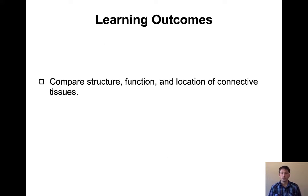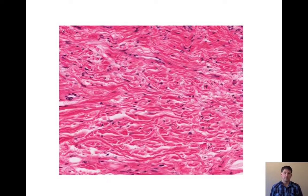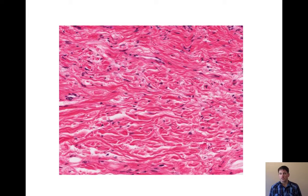Our learning outcomes today are really straightforward: structure, function, and location of connective tissues. Before we get going, remember we are talking about four different types of tissues. Epithelial tissue, which we covered last lecture, then connective tissue today, and our next lecture will cover nervous and muscle tissue. Connective tissue is the largest of the four groups.